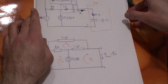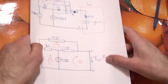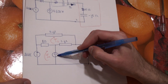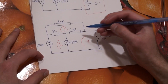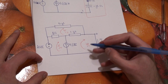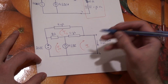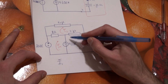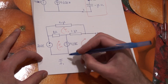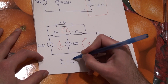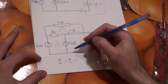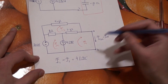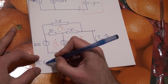This circuit is not well-behaved for mesh analysis because we have a current source, so we have to write a constraint equation. The current source forces current upward, so the constraint equation is I1 minus I2 equals 4 at an angle of minus 90 degrees.